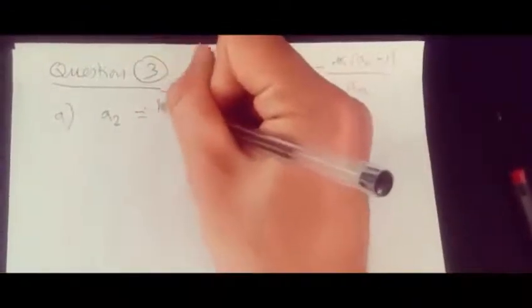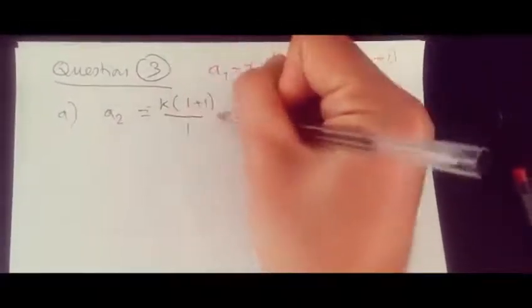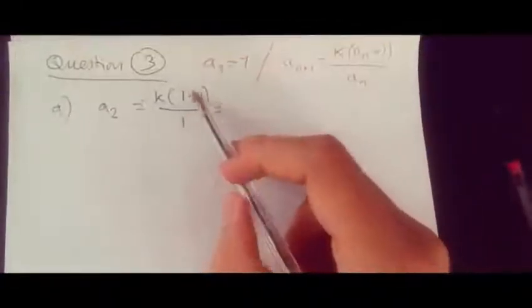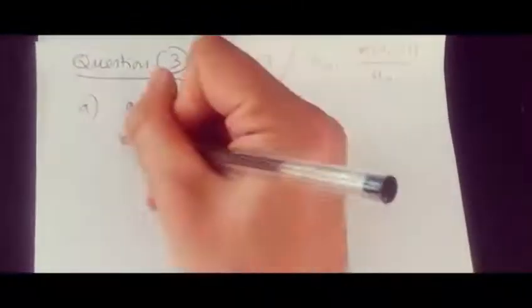Let's write it down. Replacing the values, k(a1 + 1) over 1, this would just sum up to 2. So k times 2 is 2k over 1, which is just 2k. That's the easy initial step. Now let's find a3.